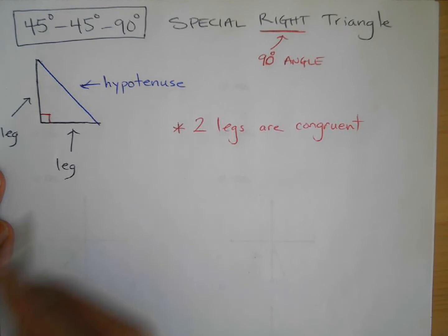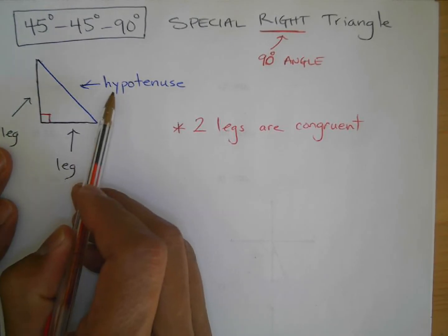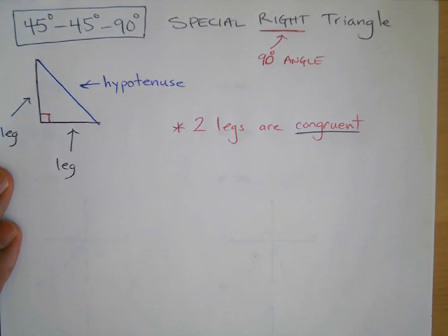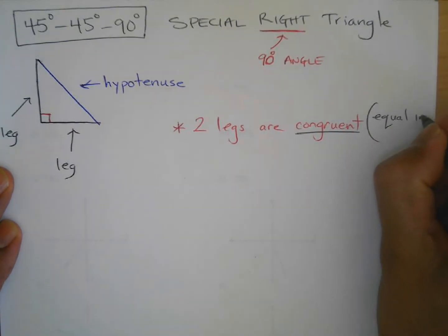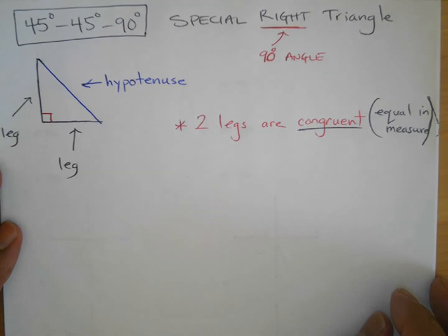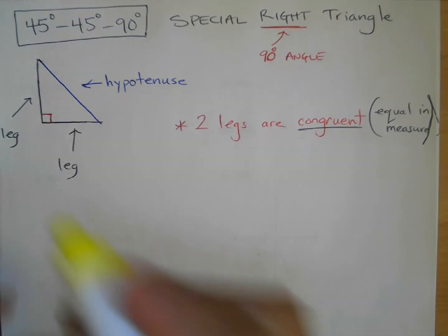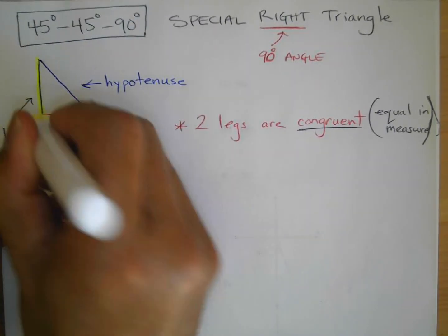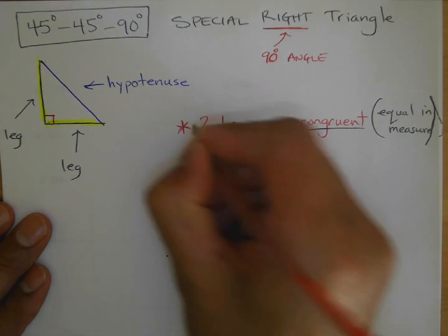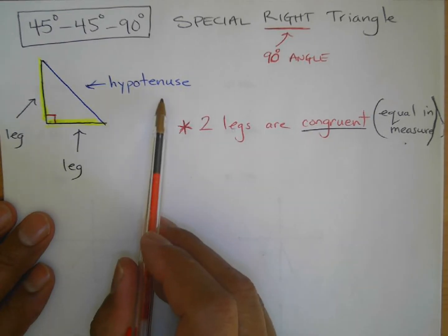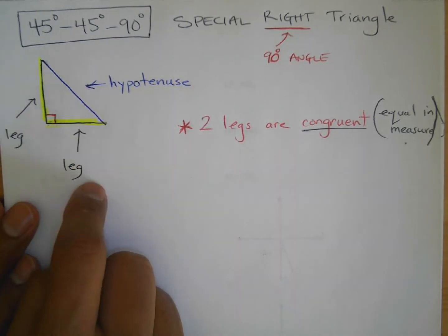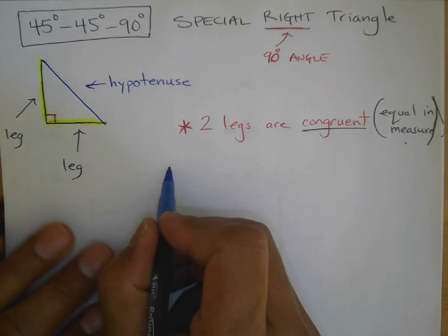These will not be different, not for a 45-45-90. The hypotenuse, however, will be a different measure — they're not all going to be the same. The legs are congruent and equal in measure. So if I know one leg is five, the other is five — that's a no-brainer. The question is: what's the hypotenuse? That's going to be a different measure, and here's how to figure it out.